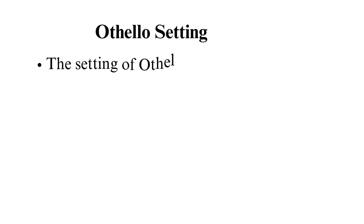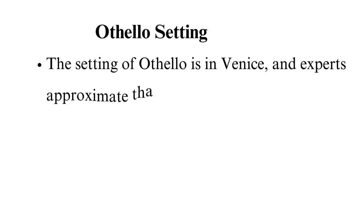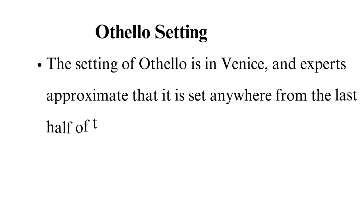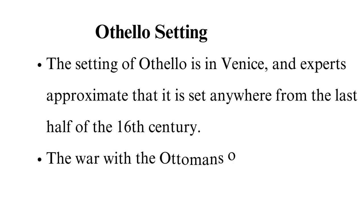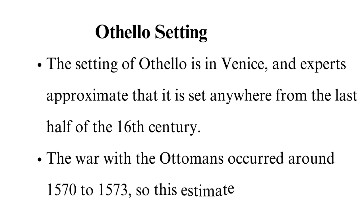The setting of Othello is in Venice, and experts approximate that it is set anywhere from the last half of the 16th century. The war with the Ottomans occurred around 1570–1573, so this estimate is accurate. Othello is noted to be a Moor — North African Muslim individuals who came from areas around Mauritania and resided around Spain and Portugal. At that point, Venice was a multicultural city that attracted many due to thriving trade, thanks to its closeness to the Mediterranean and shipyards. It was also a staging ground for the Crusades, but the city declined later on due to the plague in 1576.